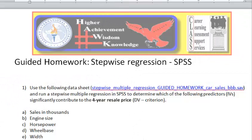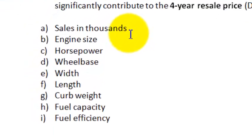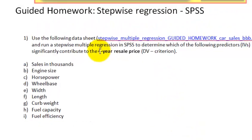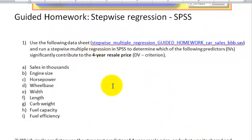Stepwise regression, stepwise multiple regression. We're going to use SPSS to determine which one of these predictors or groups of predictors is significantly contributing to the DV, which is the four-year resale price or criterion variable. We should use the right terminology. Let me pull it up.